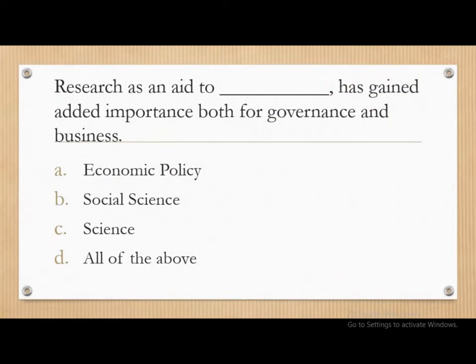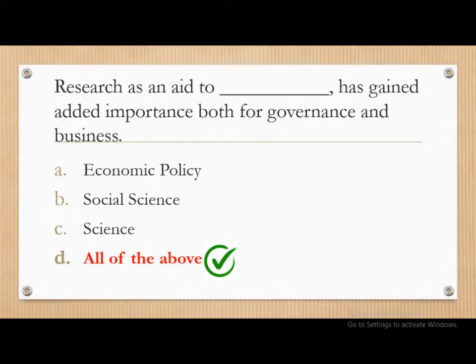Moving on. Research as an aid to dash has gained added importance both for governance and business — whether it is economic policy, social science, science, or all of the above. Students tend to select all of the above, but you must think carefully. Here the correct answer is all of the above — research is important for economic policy, social science, and science.